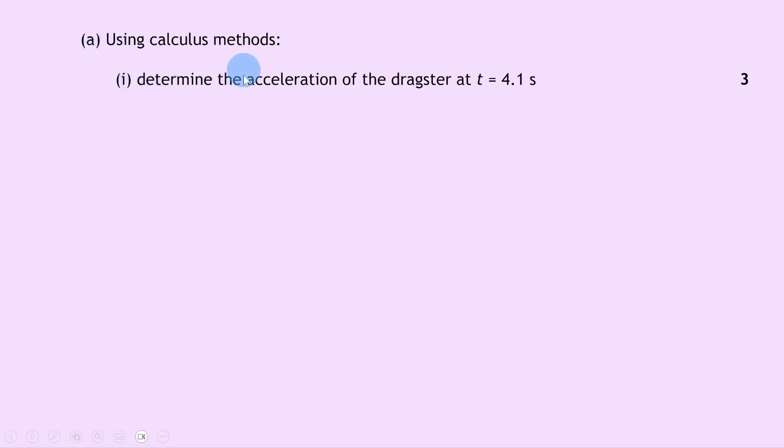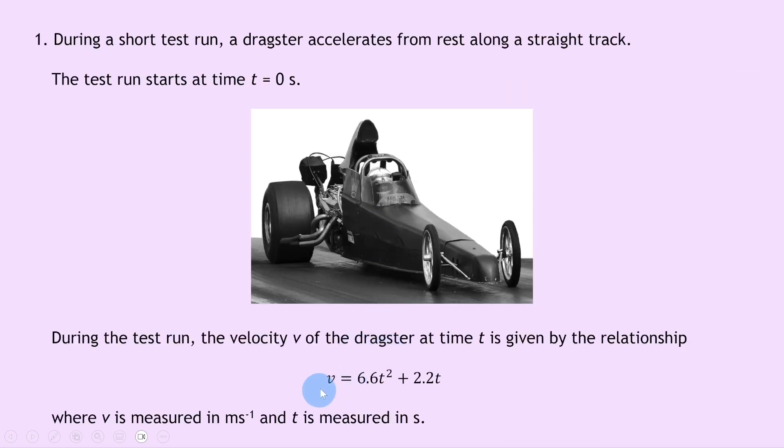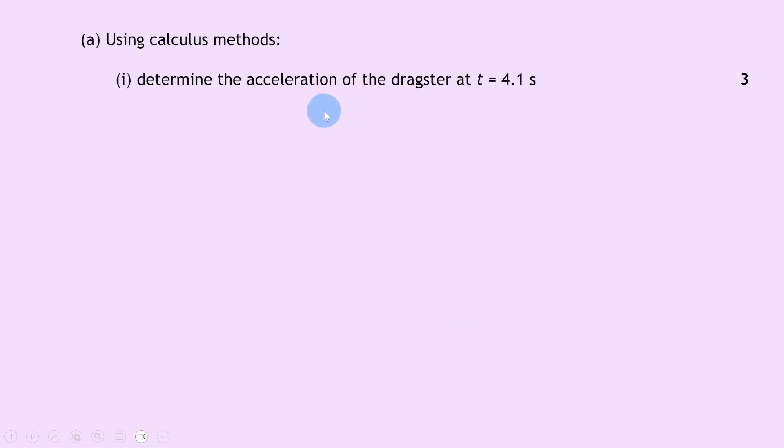Part a says using calculus methods, determine the acceleration of the dragster at time t equals 4.1 seconds, and you'll see there's three marks available here. Well, we were given an expression for velocity in terms of time t, so to find the acceleration we need to differentiate.